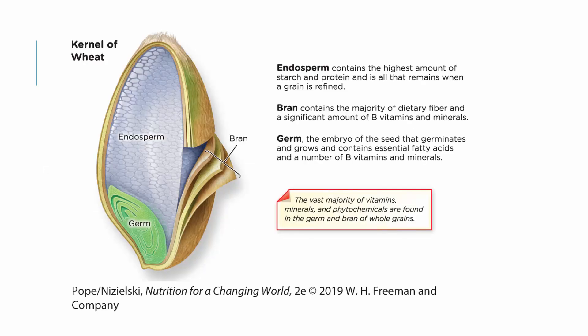The white part of the wheat kernel is the endosperm, where you find most of the starch and protein — that's all that's left when you refine the grain. The bran is where you find a lot of the fiber, B vitamins, and minerals. The germ is where you find B vitamins and essential fatty acids. This is also why whole wheat flour goes rancid faster than white flour, because the fat-containing germ is still intact. When we remove the bran and germ to make white flour, we lose a lot of nutrients naturally found in the food.